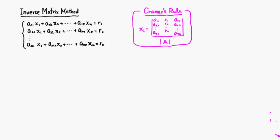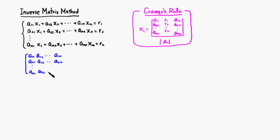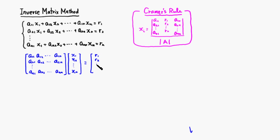I'm going to pick out all the coefficients and make up a coefficient matrix: a₁₁, a₂₁, all the way to a₁ₙ, a₂₁, a₂₂, and so on to a₂ₙ, all the way to aₙ₁, aₙ₂, and aₙₙ. Then we have a variable matrix: x₁, x₂, and so on to xₙ, and the right-hand side matrix: R₁, R₂, and so on to Rₙ.